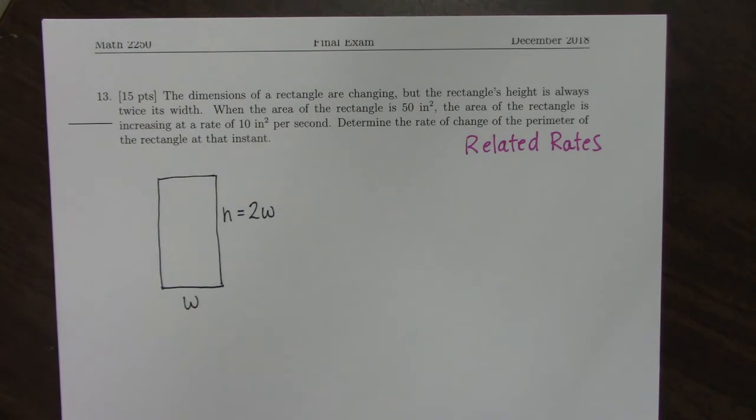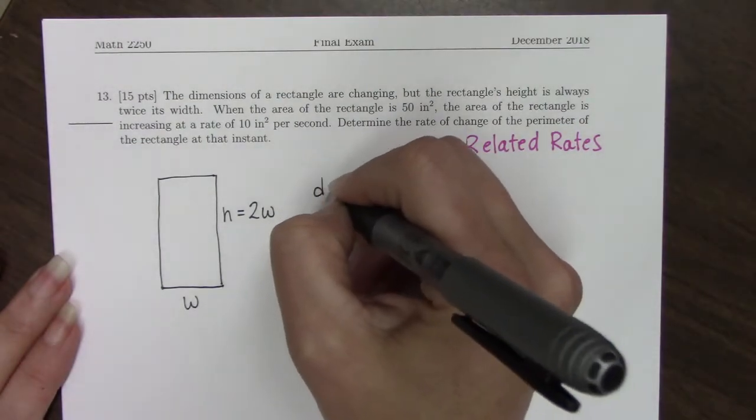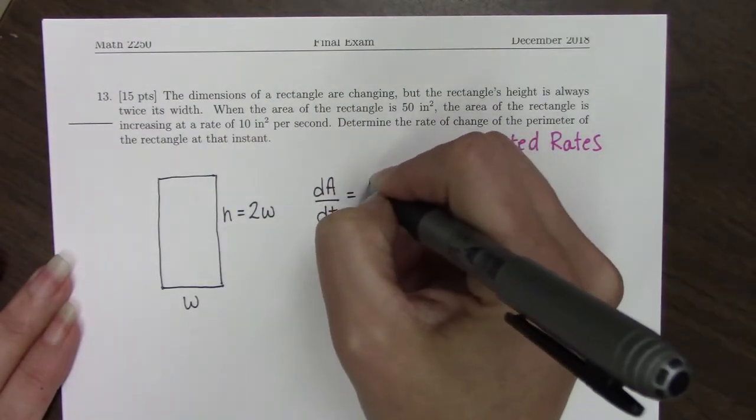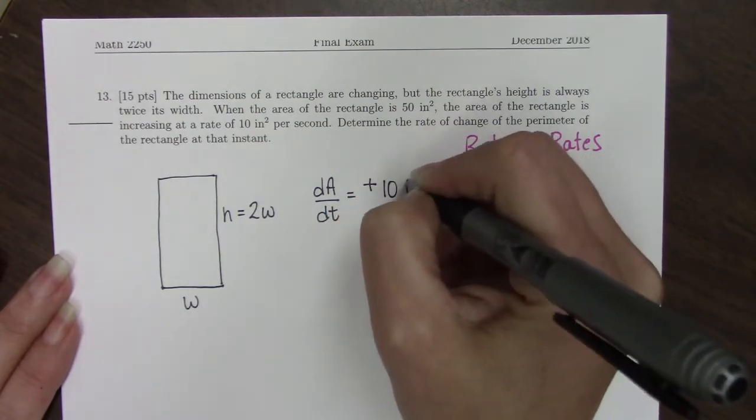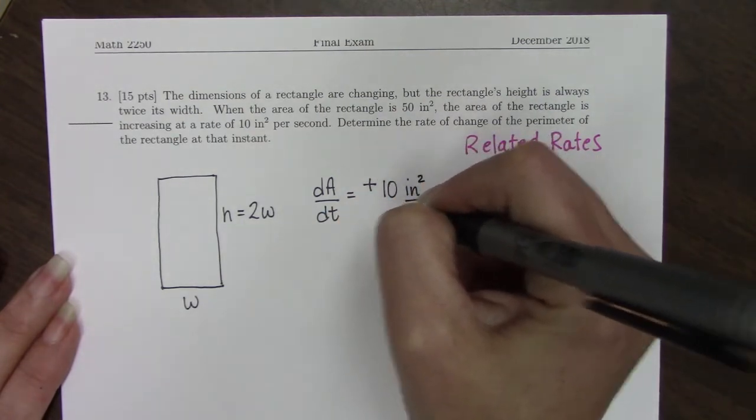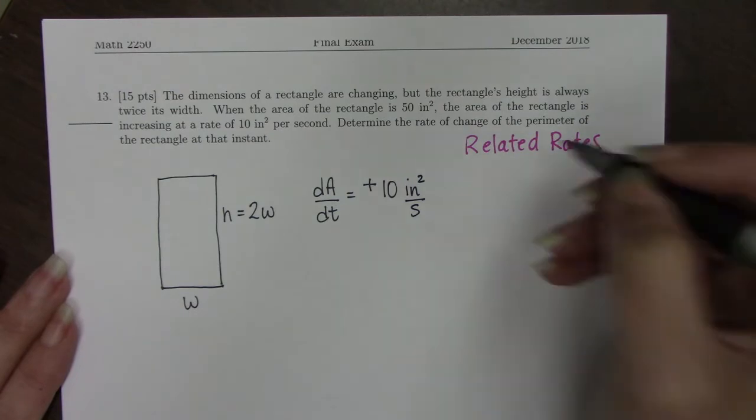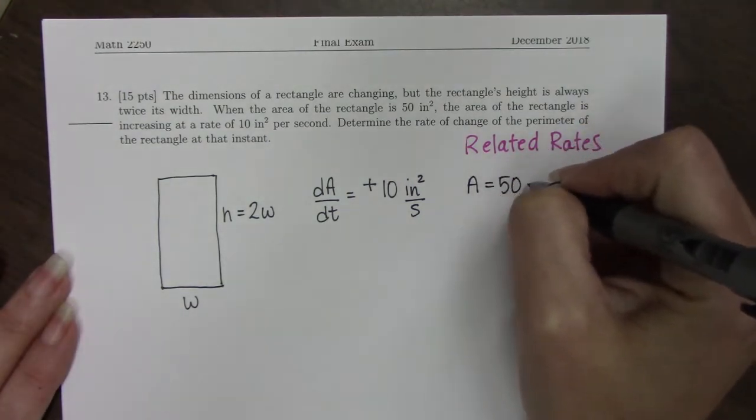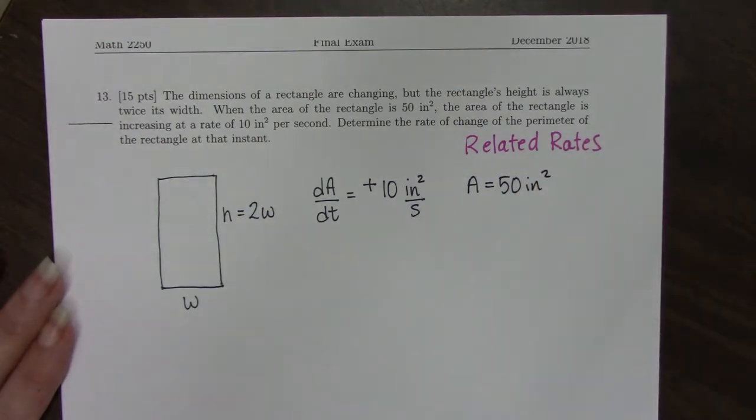It says when the area of the rectangle is 50 inches squared, the area of the rectangle is increasing at a rate of 10 inches squared per second. So the rate of the area, it's increasing. That is a positive 10 inches squared per second. And we're going to look at a moment in time where the area is 50 inches squared.